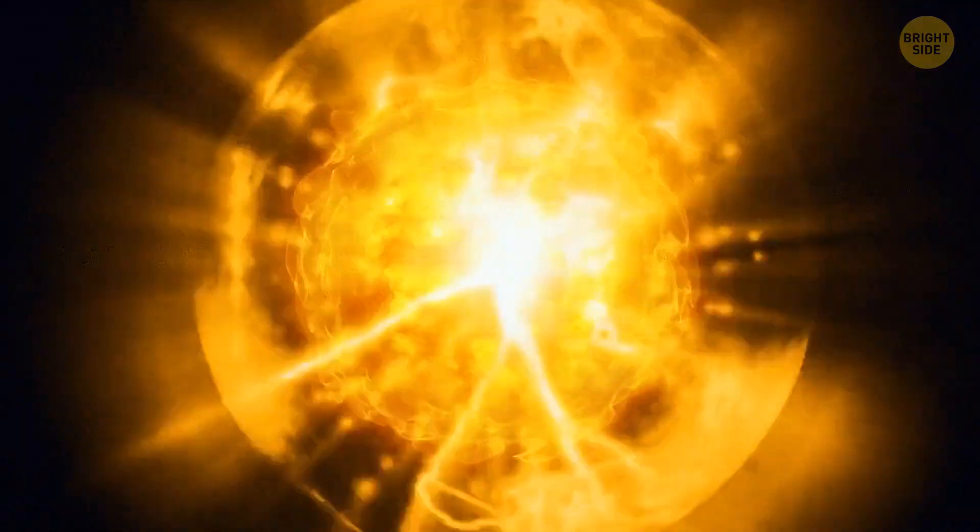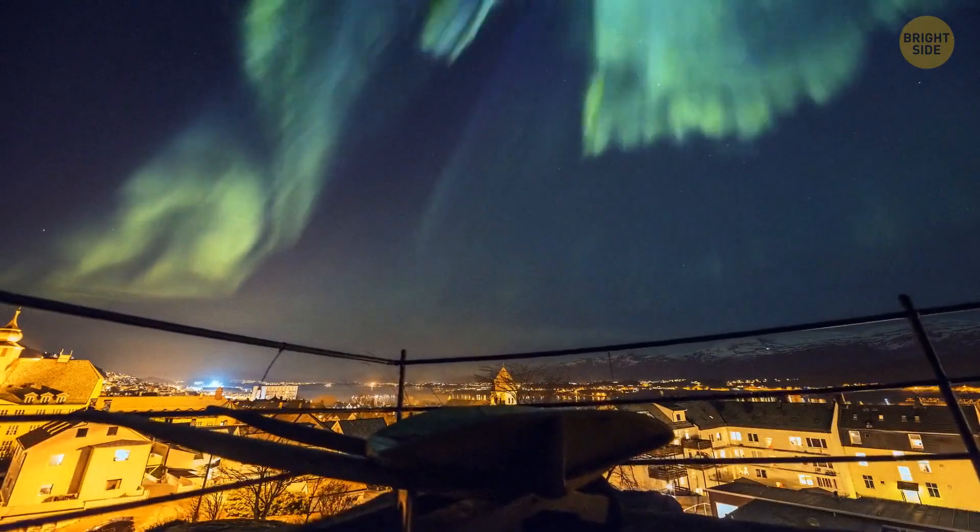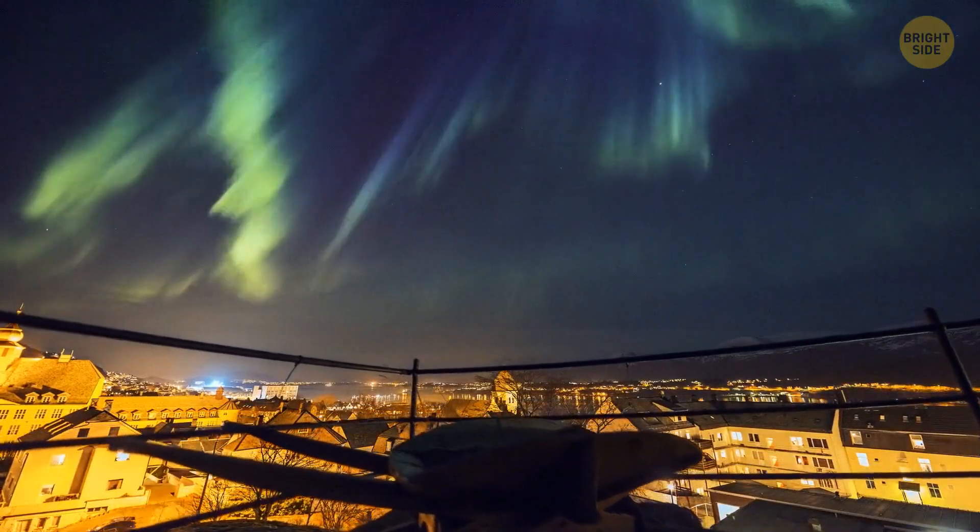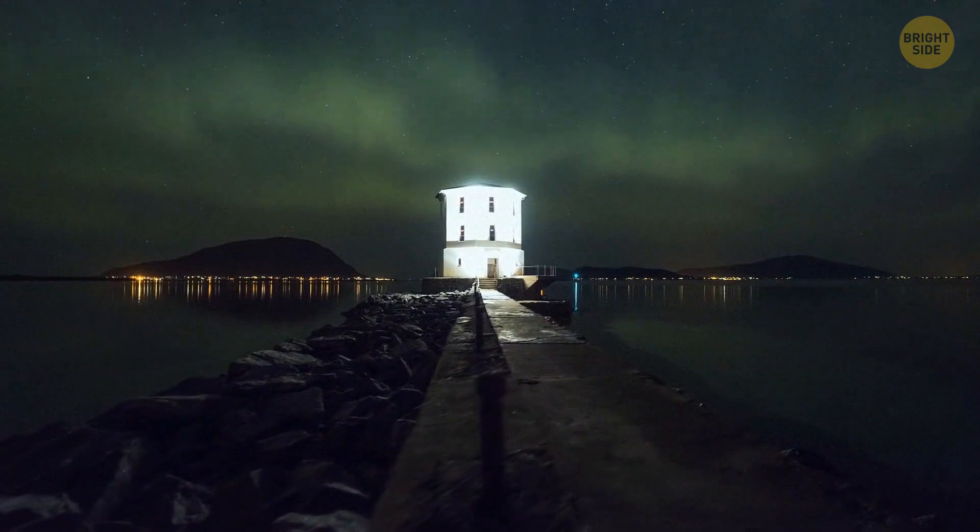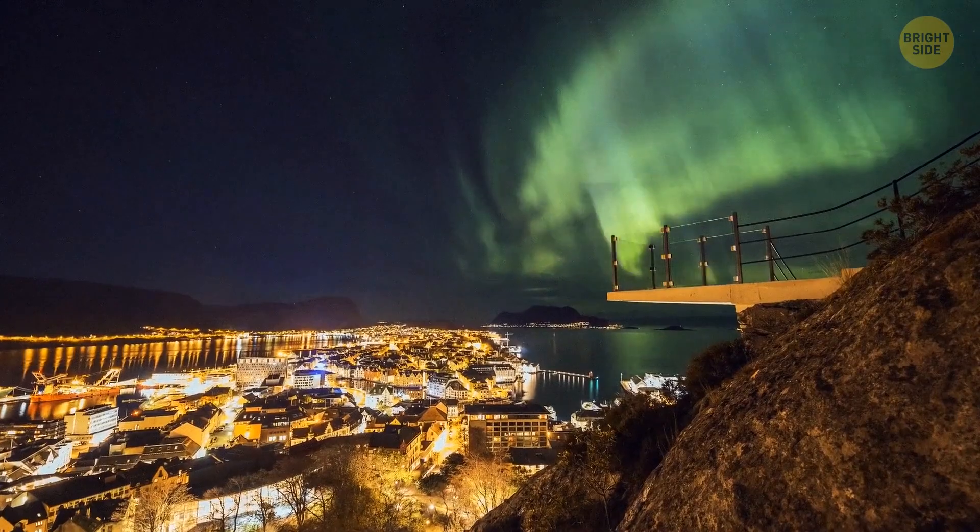A surprise solar storm hit us on June 25, 2022. One photographer even managed to capture stunning bright auroras that flashed across the dawn sky in Calgary, Canada, and lasted for five minutes. They were caused by the storm.